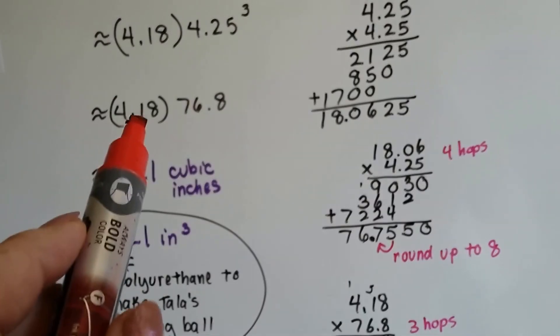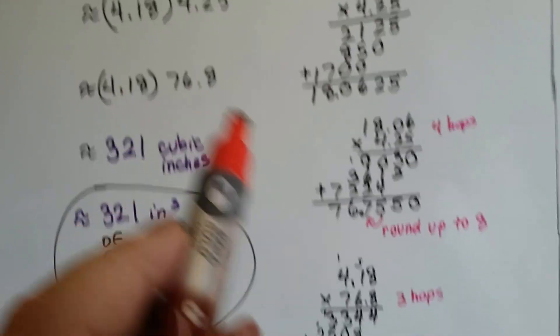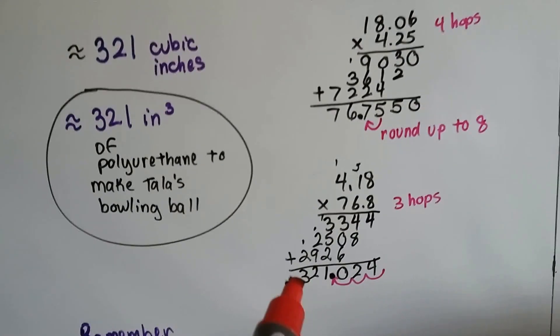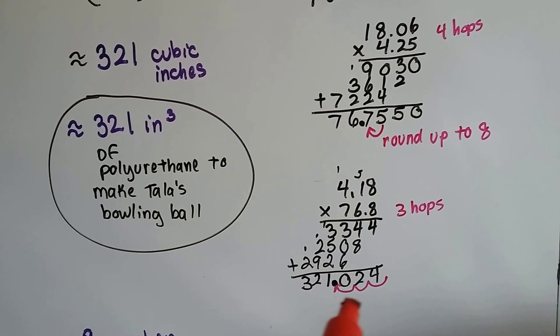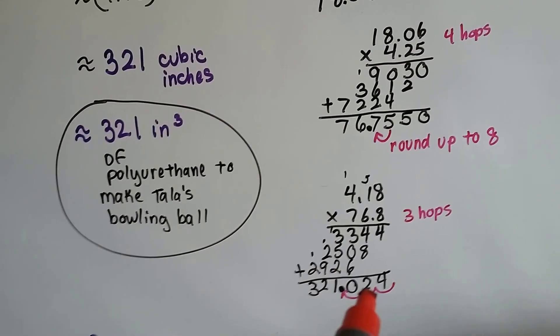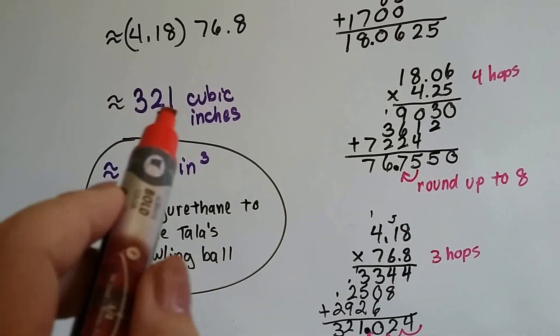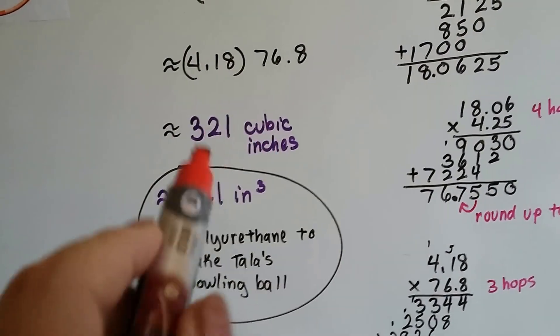Now I'm going to multiply the 4.18 by the 76.8. I got 321.024. And because that zero is so small, I just left it at 321. So that's 321 cubic inches.